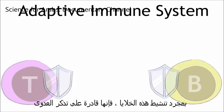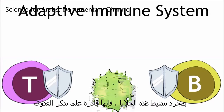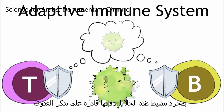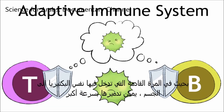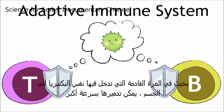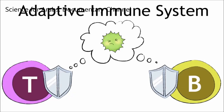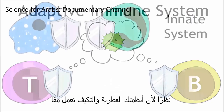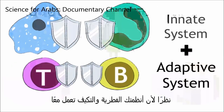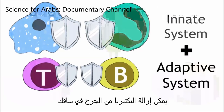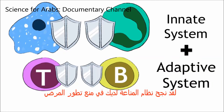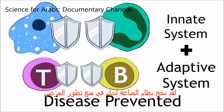Once these cells get activated, they are able to remember an infection, so that next time the same bacteria enters the body, it can be destroyed more rapidly. Due to your innate immune system and your adaptive immune system working together, the bacteria can be cleared from the cut in your leg. Your immune system has successfully prevented the development of disease.